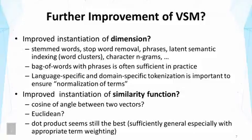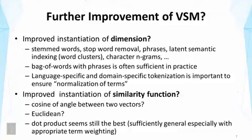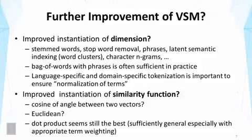There is also the possibility of improving the similarity function. So far we have used the dot product, but one can imagine other measures — for example, we can measure the cosine of the angle between two vectors, or we can use Euclidean distance. These are all possible, but the dot product seems still the best. One reason is because it's very general — sufficiently general if you consider the possibilities of doing weighting in different ways. For example, the cosine measure can be regarded as the dot product of two normalized vectors: we first normalize each vector and then take the dot product, which is equivalent to the cosine measure.